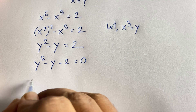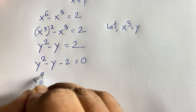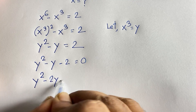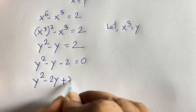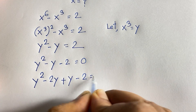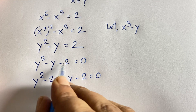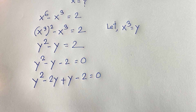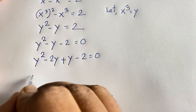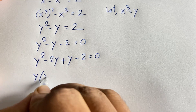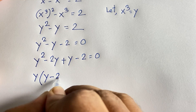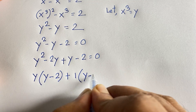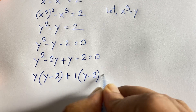Now, doing middle-term factoring on this equation, we get y squared minus 2y plus y minus 2 is equal to 0. Note that 2 times 1 equals 2, and 2 minus 1 equals 1, which gives us the middle coefficient. Now y is common in the first two terms, so factoring gives y times (y minus 2), plus 1 is common in the last two terms.